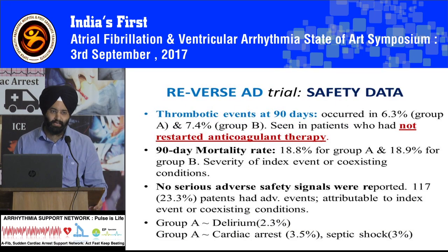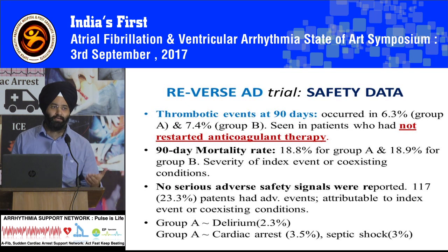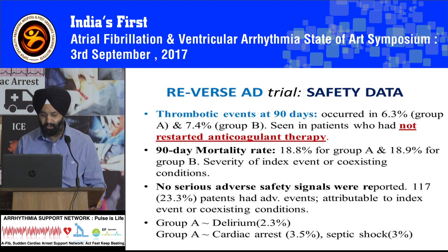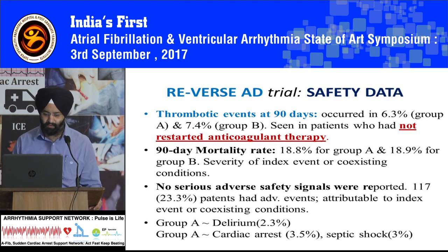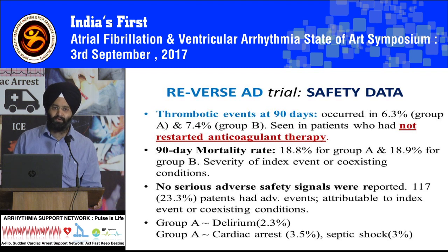When patients were analyzed at 3 months — at 90 days — thrombotic events had occurred in 6.3% of patients in Group A and 7.4% in Group B. But it was seen that these patients had not restarted anticoagulant therapy after being given idarucizumab. The 90-day mortality rate was similar in both groups — 18.8% and 18.9% — and these were related to the coexisting conditions of the patient. No serious adverse safety signals were reported. Although 117 patients, almost 23%, had adverse events, they were mainly attributed to the index event or the coexisting condition.